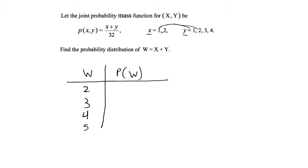Then 2+1=3 — we already have that. 2+2=4, 2+3=5, and 2+4=6. So the possible values of w are 2, 3, 4, 5, and 6. We now need to find the corresponding probabilities that w takes on each of these values.